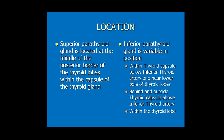Regarding location, the superior parathyroid gland is located at the middle of the posterior border of the thyroid lobes, within the capsule of the thyroid gland. The inferior parathyroid gland is variable in position. Common positions include within the thyroid capsule behind the inferior thyroid artery near the lower pole; behind and outside the thyroid capsule above the inferior thyroid artery; or within the thyroid lobe itself.